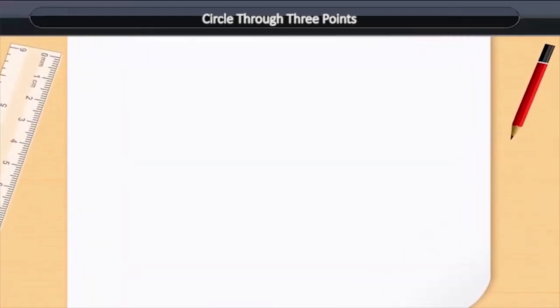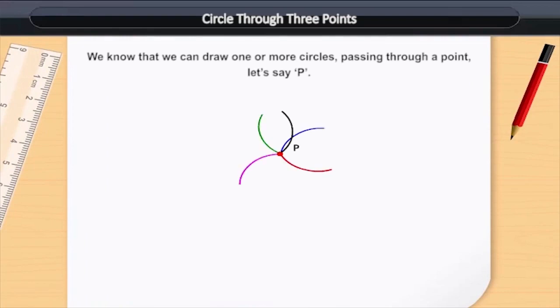Circle through three points. We know that we can draw one or more circles passing through a point, let's say P.